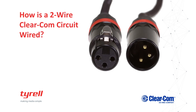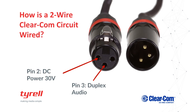Let's take a look at how 2-wire is wired. The term 2-wire comes from the fact that 2 wires are used to establish a signal path for both talk and listen. However, a standard 3-pin XLR is used for connection, with the third pin — pin 1 — being used for ground. As can be seen in this example, pin 2 carries the 30 volts of DC power voltage, while pin 3 carries the audio signal. The separation of power and audio ensures that the audio signal remains relatively clear of noise.